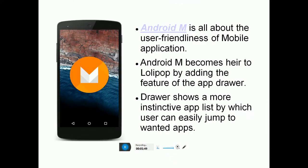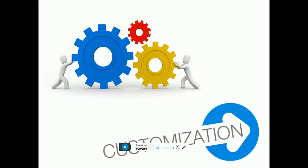Android M is also about user-friendliness in mobile applications. Android M builds on Lollipop by adding features such as the App Drawer, which shows more instant access to apps and lets users easily jump to wanted apps.